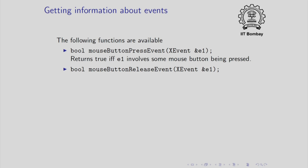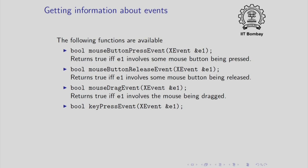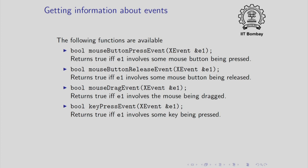Likewise, you have a function mouse_button_release_event, which also takes an event as argument and returns true if the event involves some mouse button being released. You also have a mouse_drag_event function — it takes an event object as argument and returns true if the event involves the mouse being dragged. You also have a function key_press_event, which also takes an event object as argument and returns true if and only if the event involves some key being pressed. If you know that a certain event involves a key being pressed or the mouse is being dragged, you would like to get more information, such as where the mouse is. We will describe how to do that next.